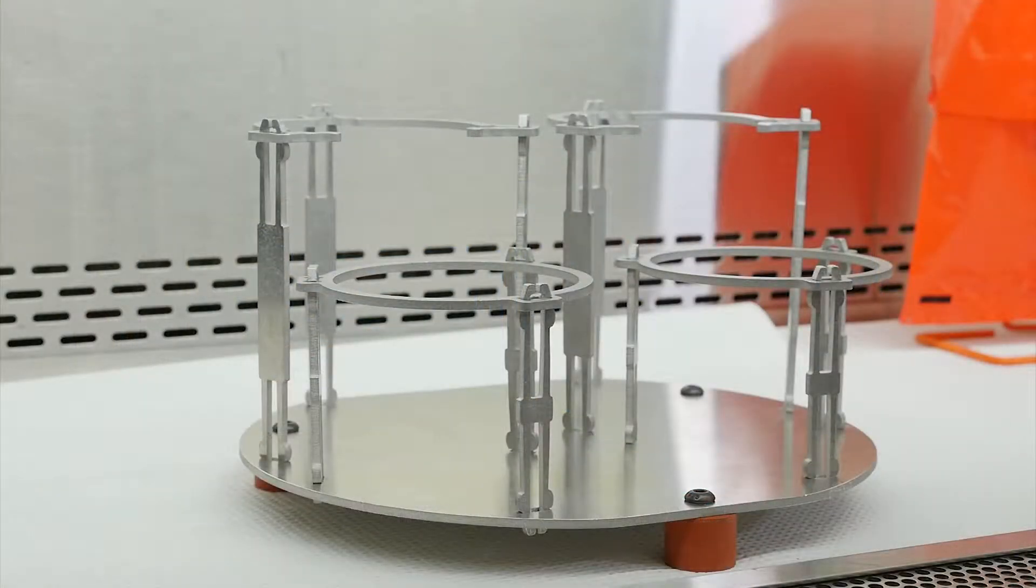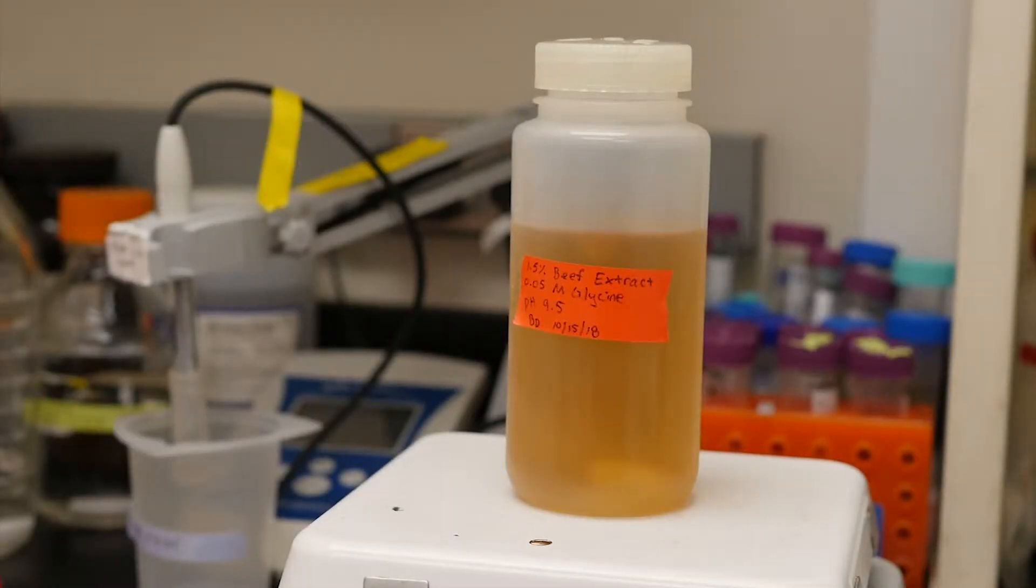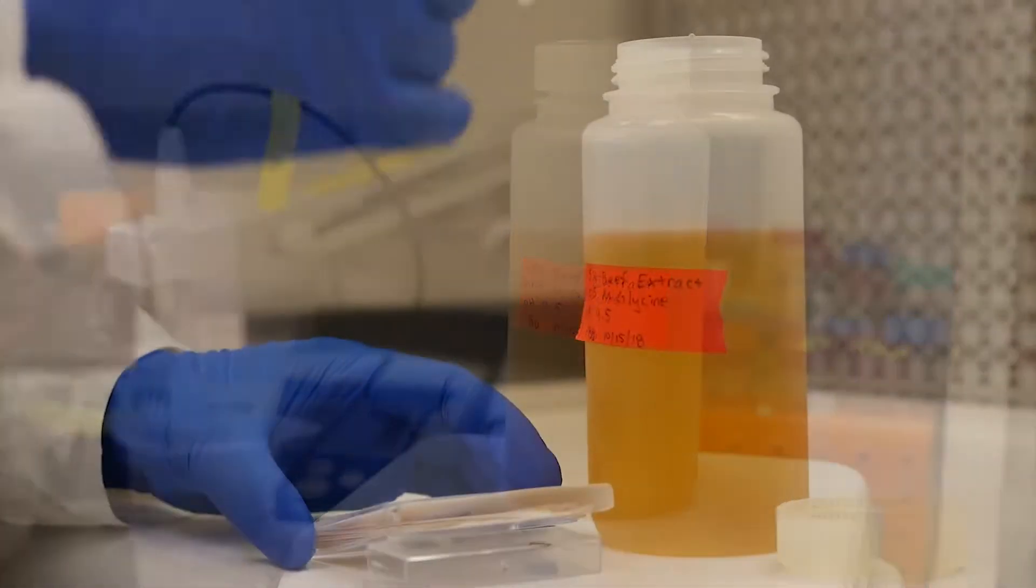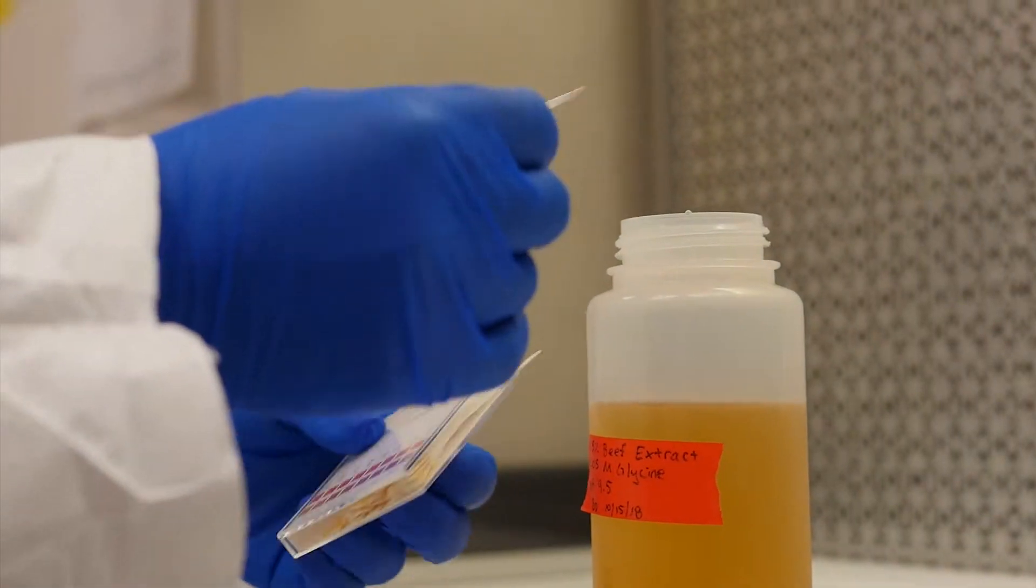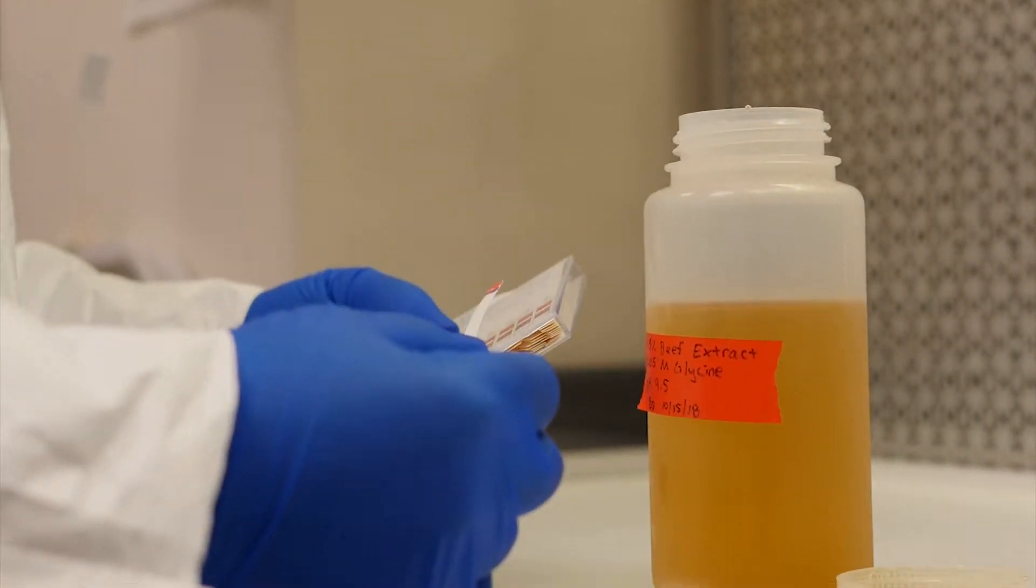Now that we have reviewed biosafety techniques and ways to prevent cross-contamination, let's go over the steps necessary to prepare for elution. Prior to elution, prepare your eluent. This is a 1.5% beef extract solution with 0.05 molar glycine at a pH of 9.5.